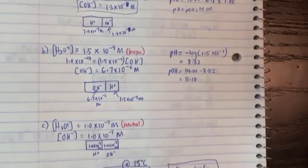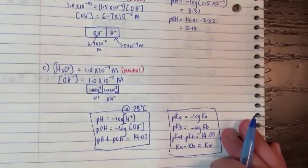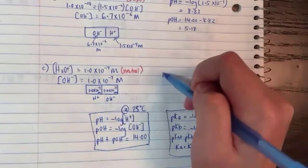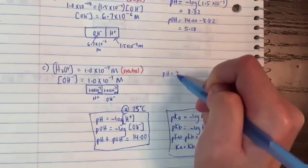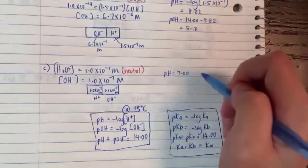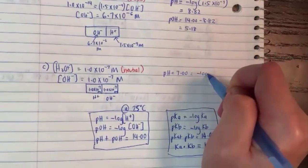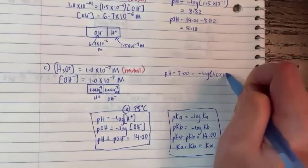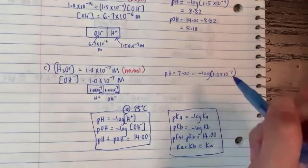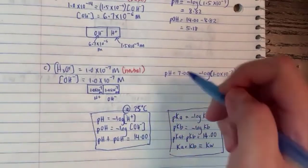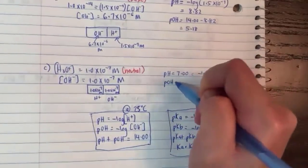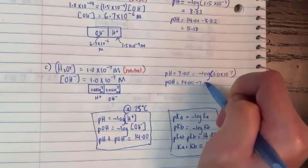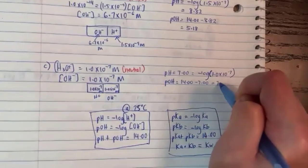Can you guys do part B? Part B: what is the pH? It's minus log of 1.5×10⁻⁹, which gives 8.82. Then pOH is 14 minus 8.82, because pH plus pOH equals 14, which gives 5.18.